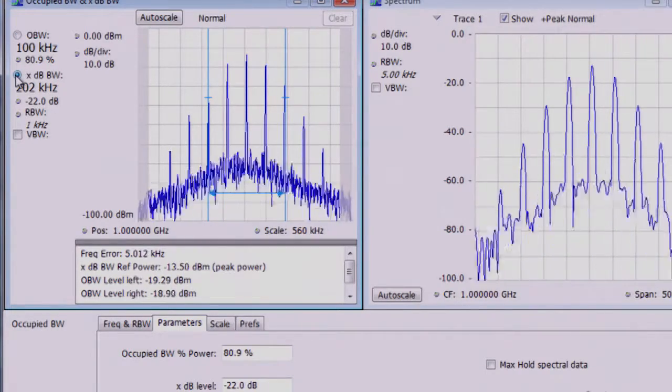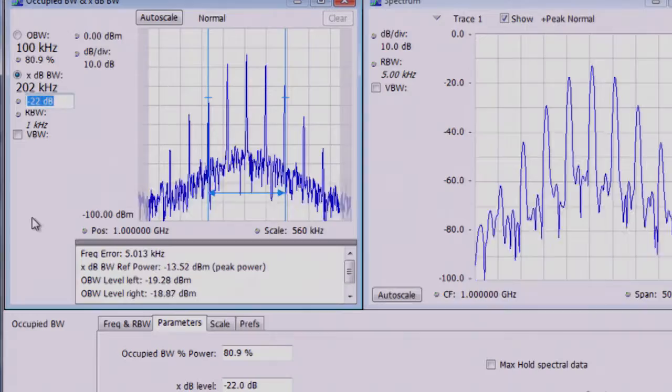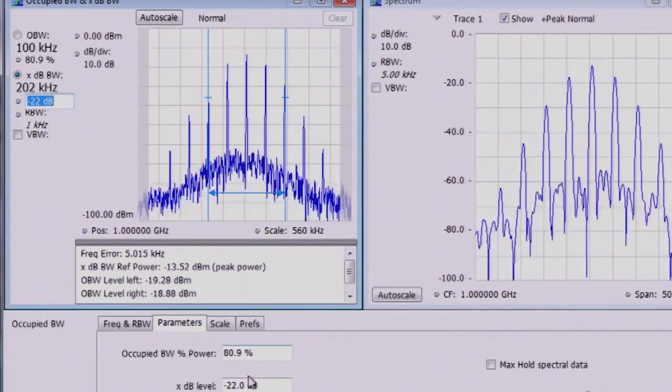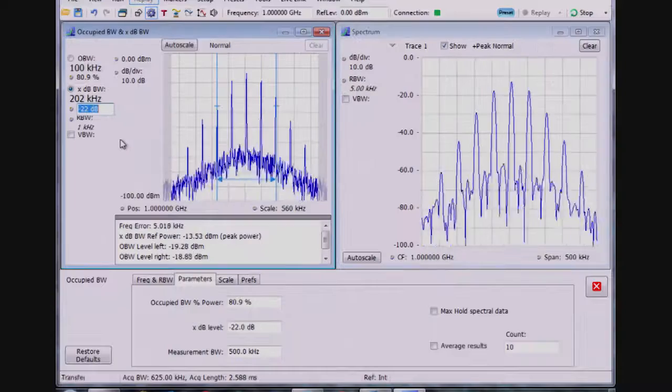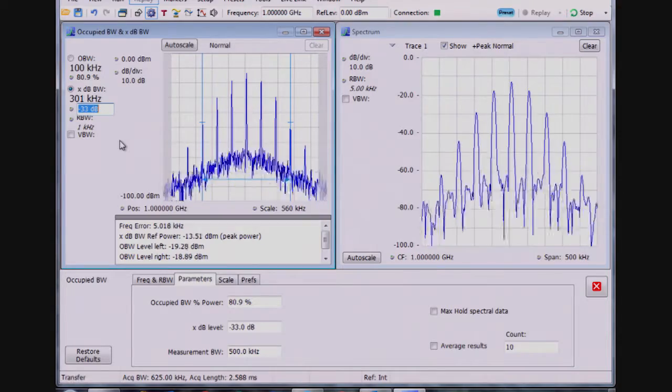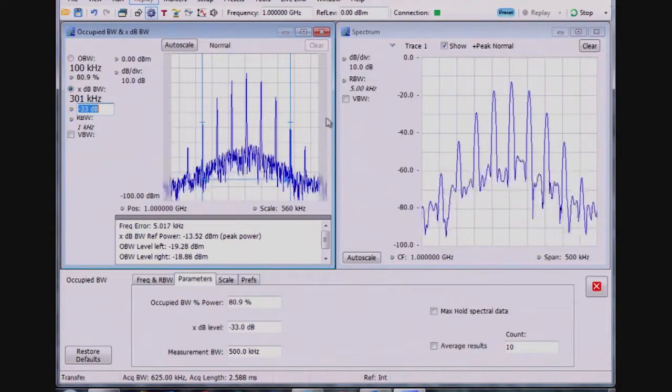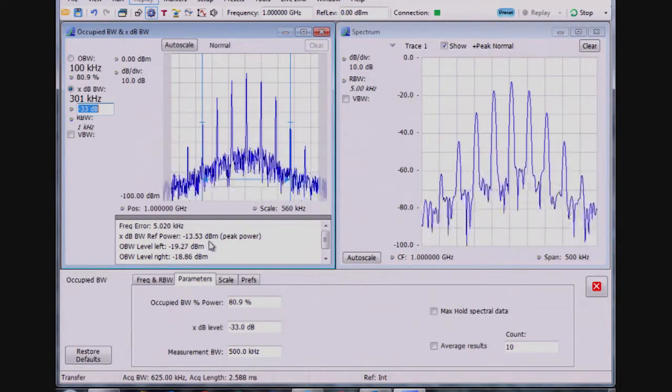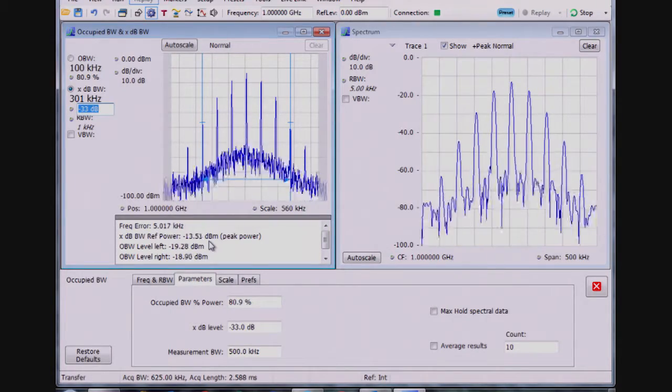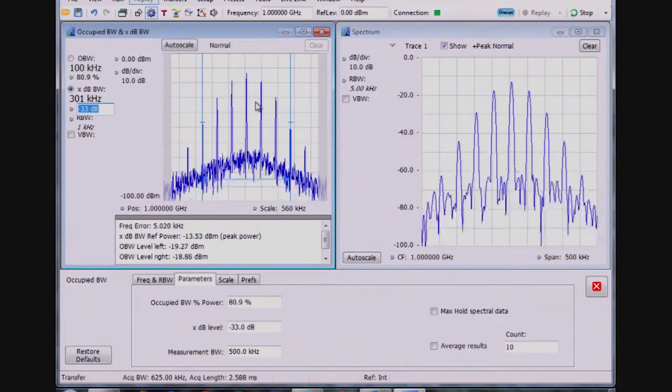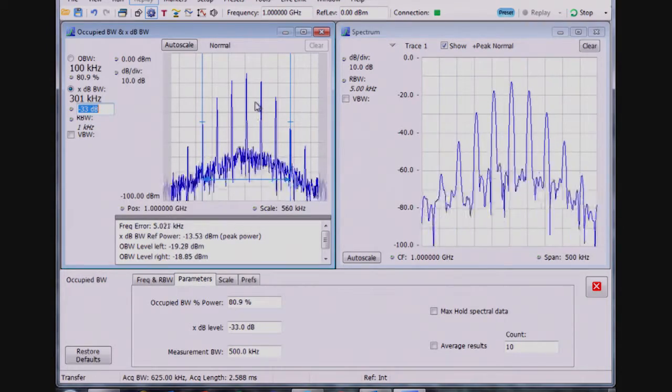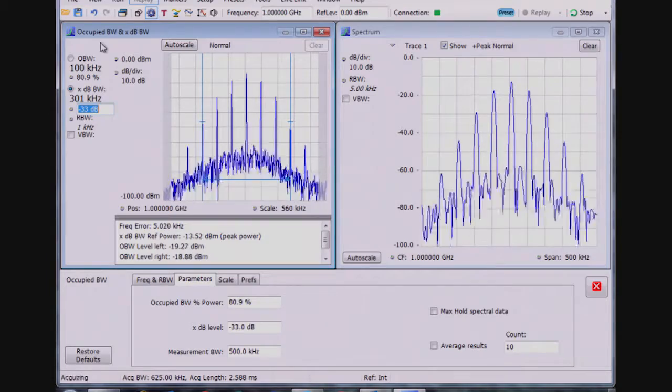Similarly, I could look at the X dB down number. Right now it's at minus 22 dB is the X dB level, and I can see the measurement readout on the screen here. As I change that, I can go to minus 33 dB. Here I see where 33 dB is contained. X dB down is minus 13.5 dBm based on the peak power. So basically seeing occupied bandwidth and X dB down measurements with some configurations here.